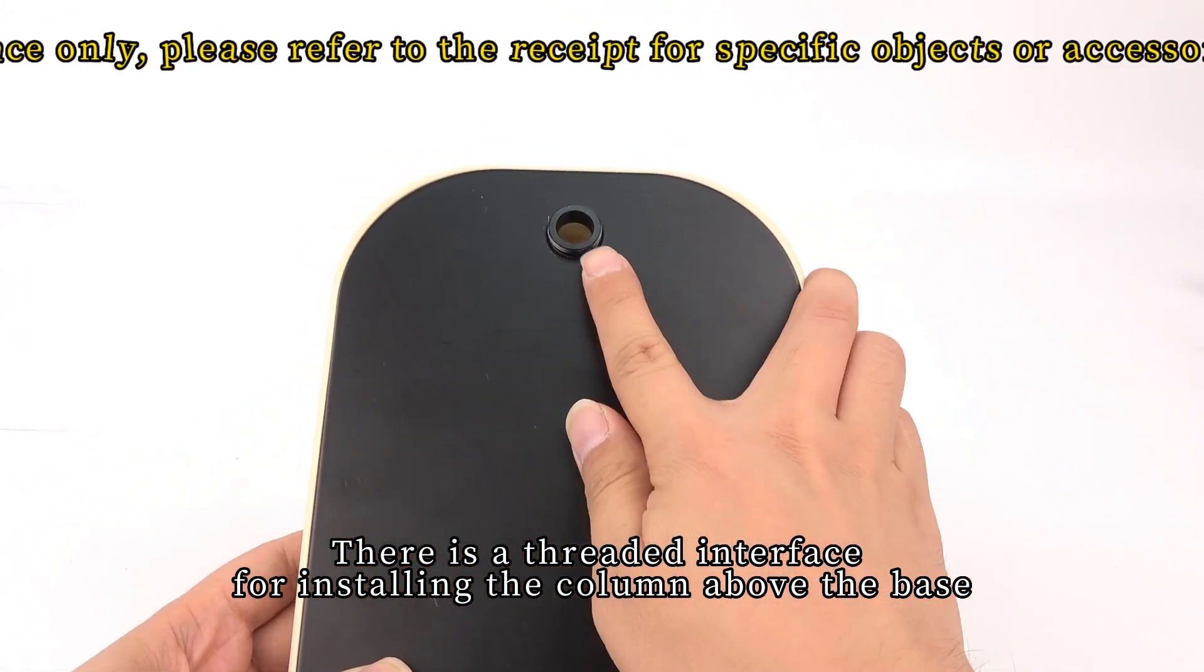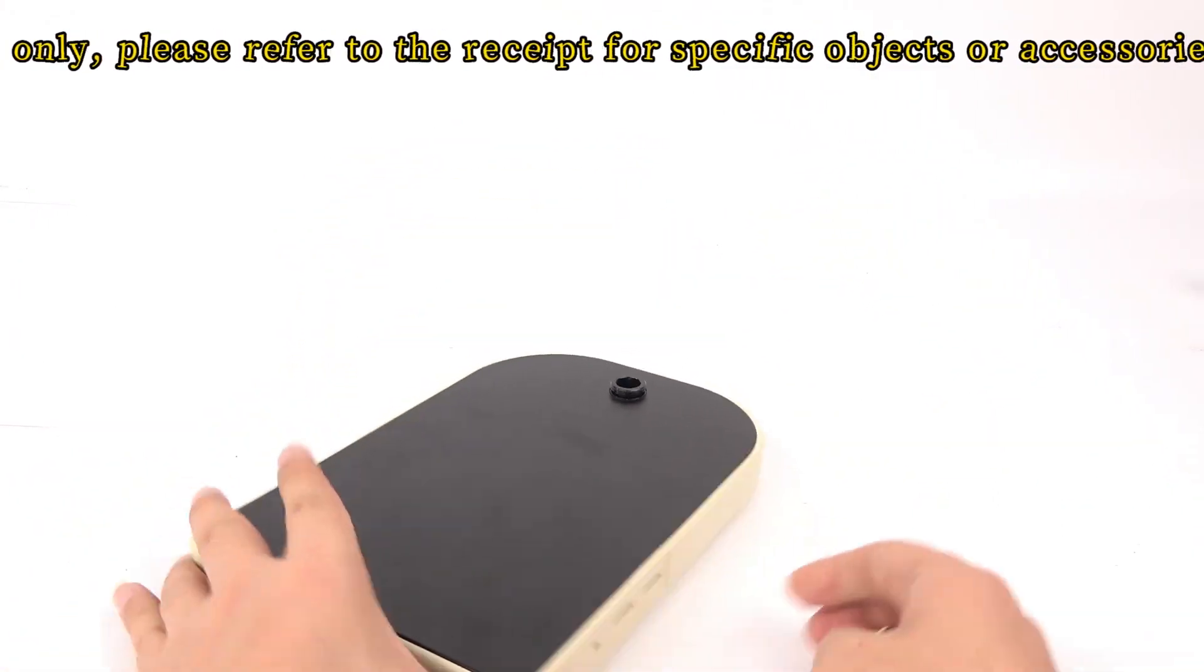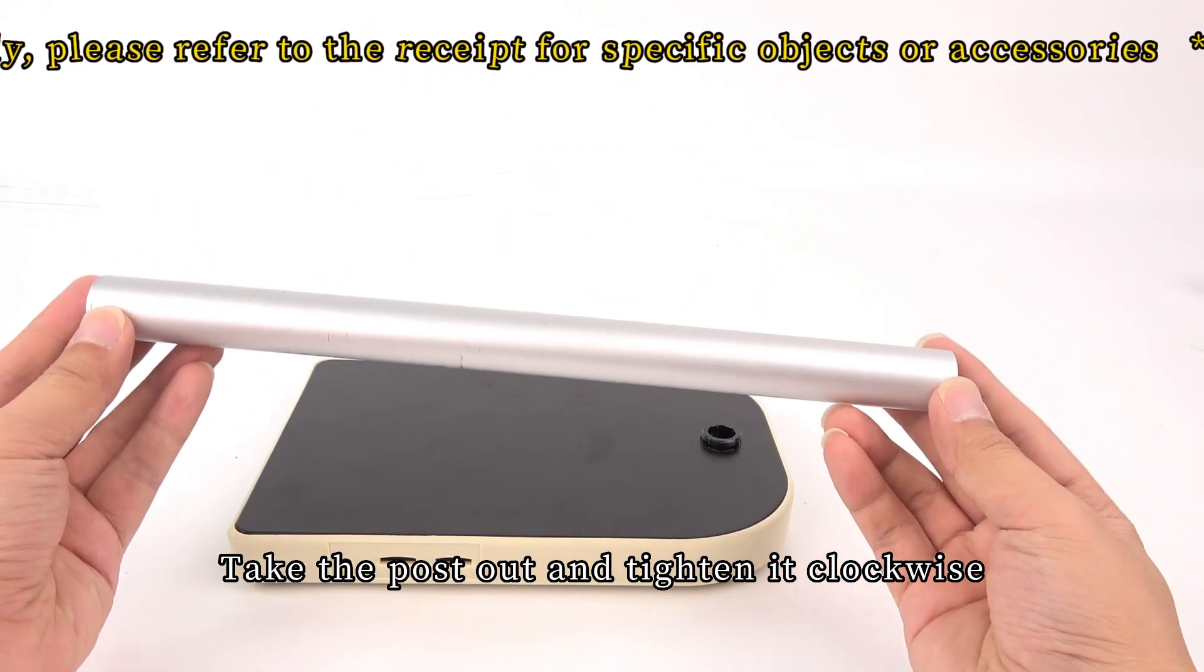There is a threaded interface for installing the column above the base. Take the post out and tighten it clockwise.